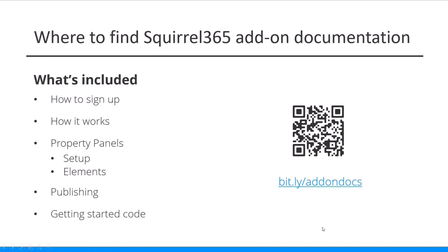Where to find the Squirrel add-on documentation — there's a link you can follow or scan the QR code, and that will take you to it. It covers a load of different things: how to sign up, how the framework works, how the communication works between Squirrel and your add-on, and how to prepare data to send from your add-on back into Squirrel. There's also information on property panels. The property panels in your add-ons will look and work and feel exactly the same as the native components in Squirrel. There's documentation on how to set them up, specifically how to structure your JSON to build those panels, and an element library full of elements you can use in your property panel along with customizable properties.